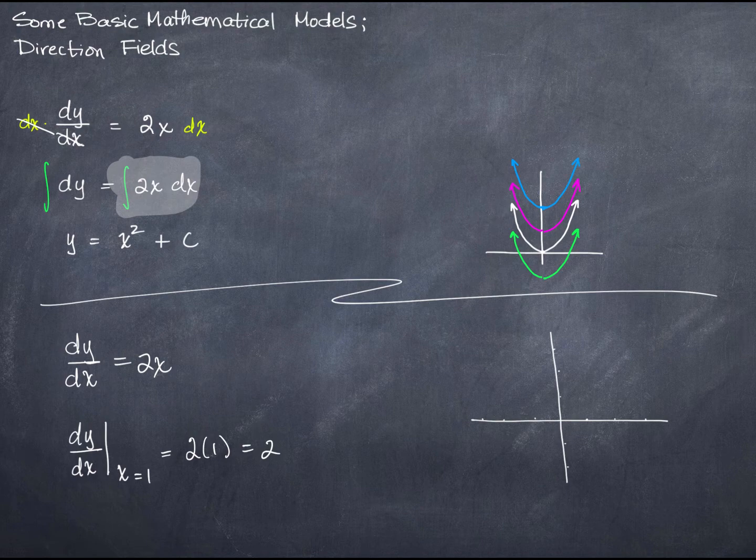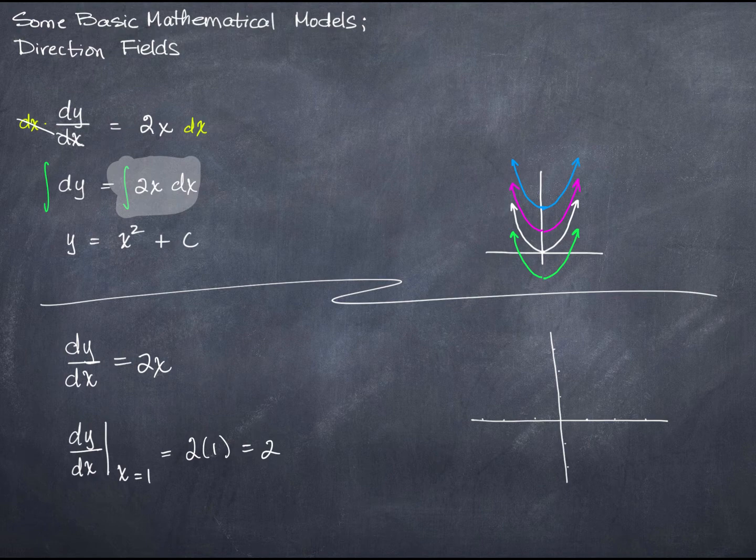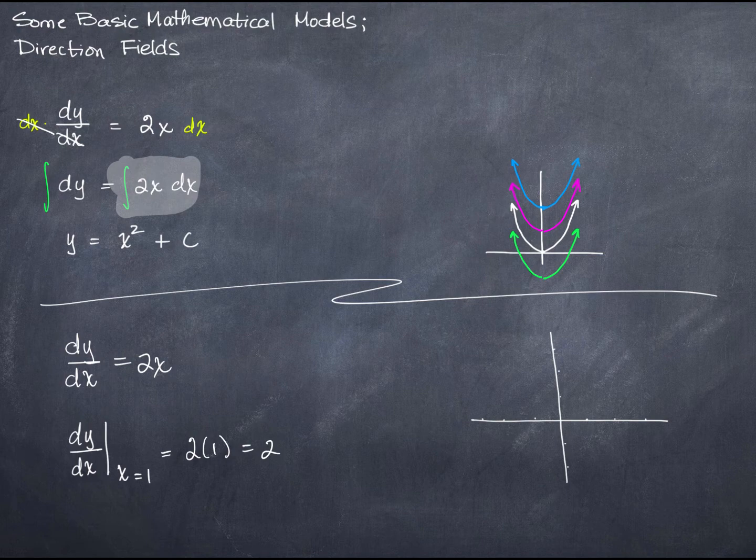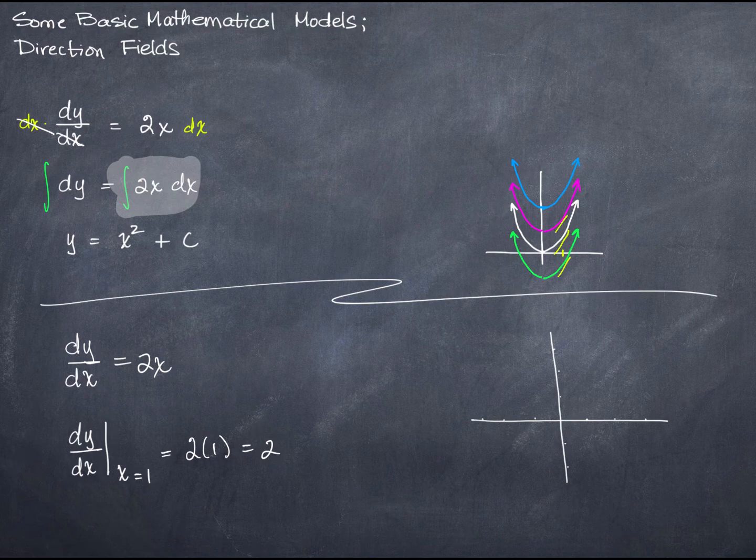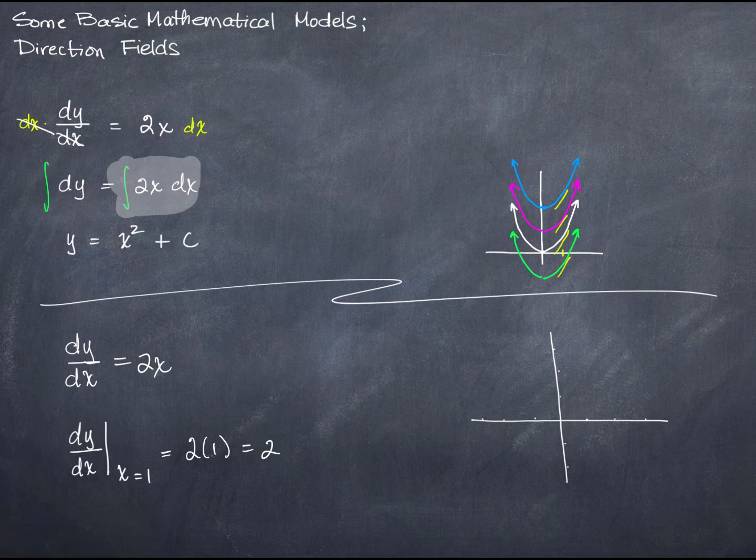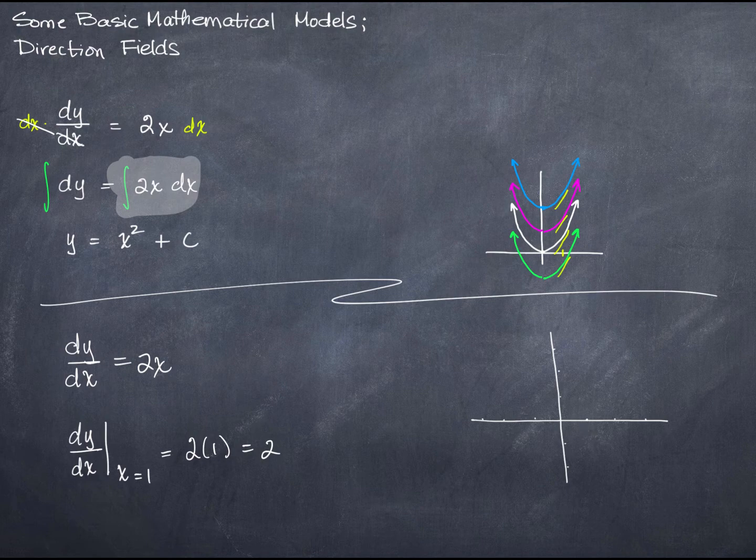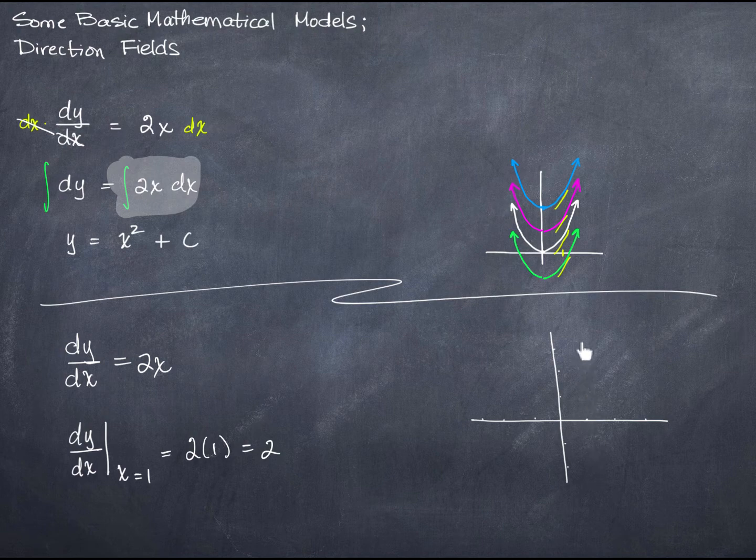And if I look at that up here on this graph, let's see, I'll use yellow. At x equals 1, the slope is 2 no matter what y is. So how does that play out in a slope field? Well, since it doesn't matter what y is, I'm going to go where x equals 1, and I'm going to look up and down from that x equals 1 position.